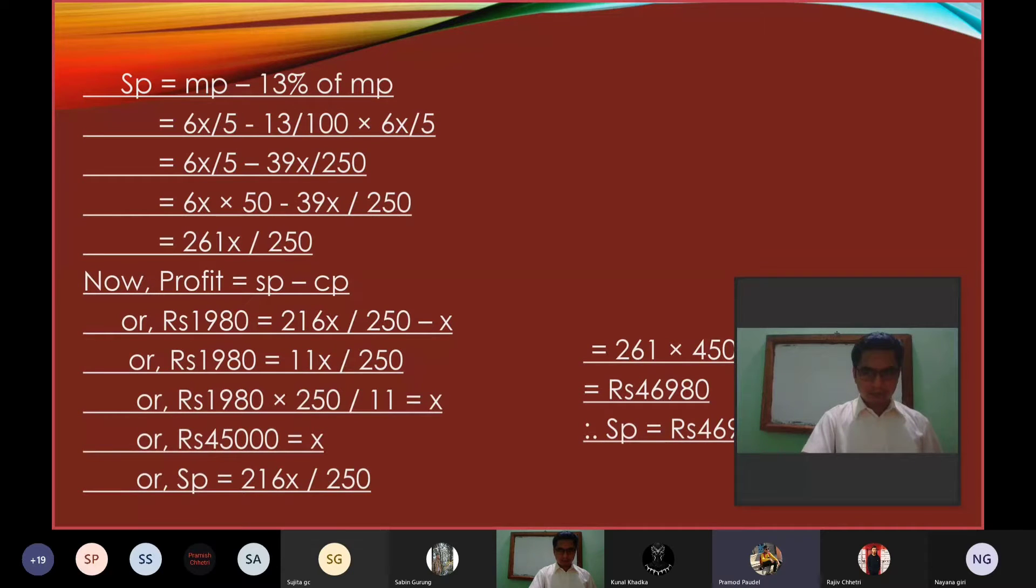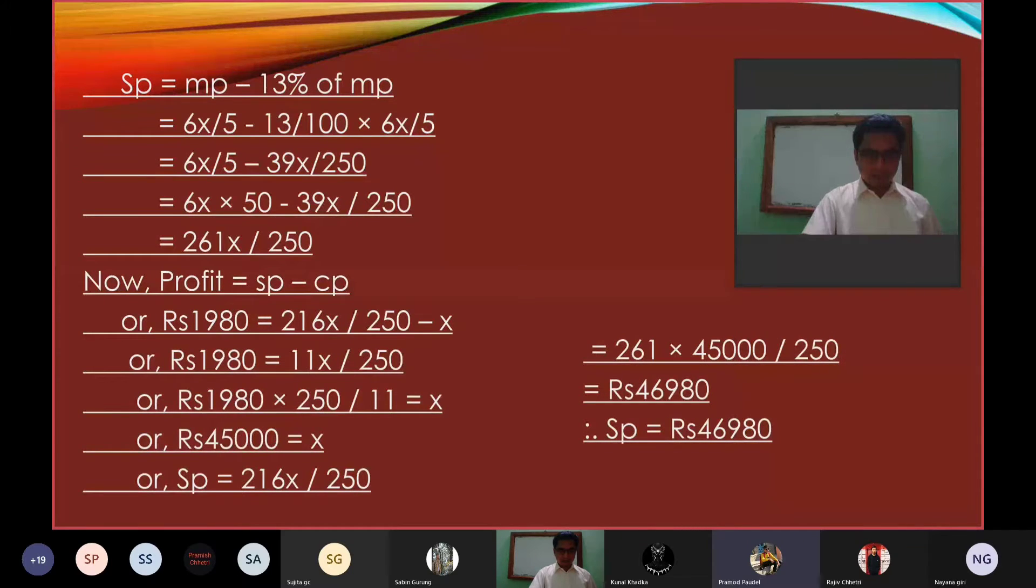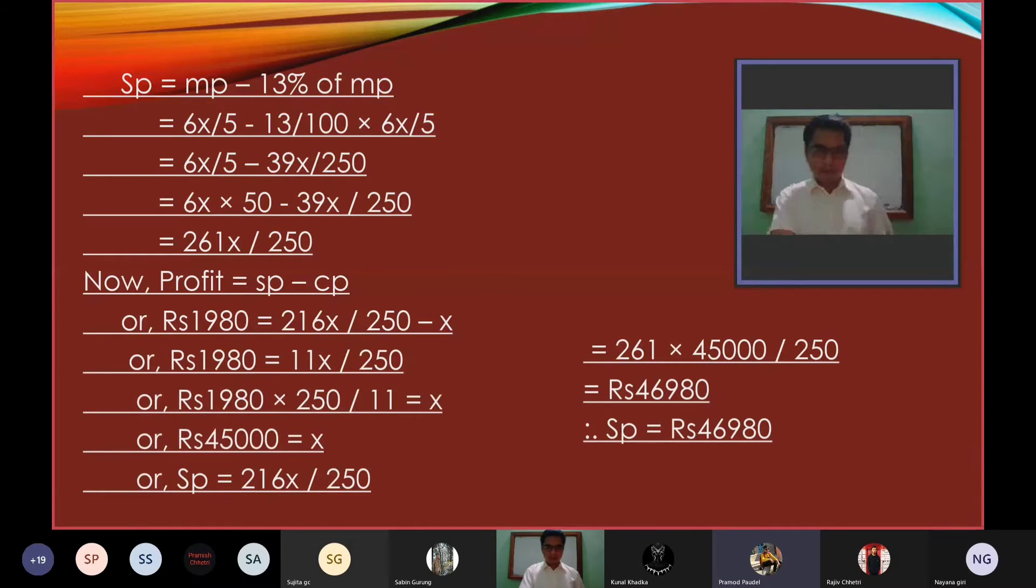SP equals 261x/250, equals 261 times 450 divided by 250, equals Rs 46,980. Therefore SP equals Rs 46,980.